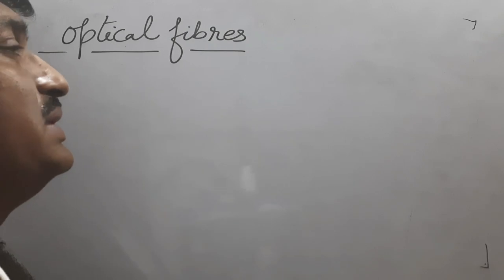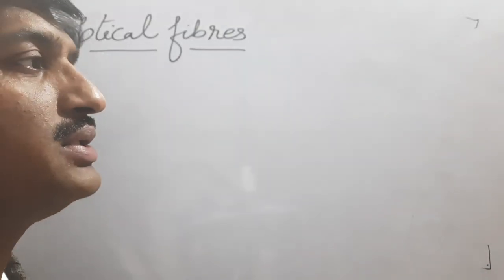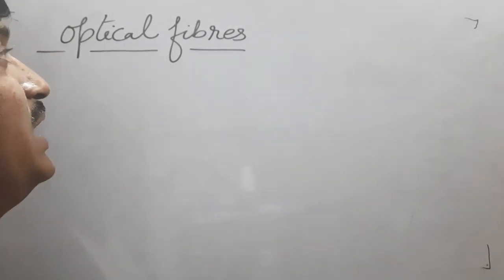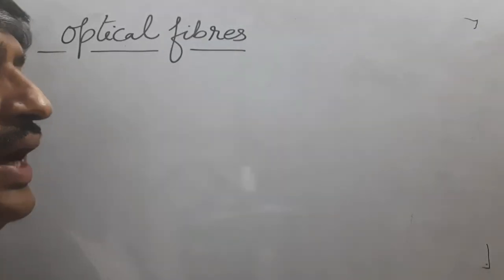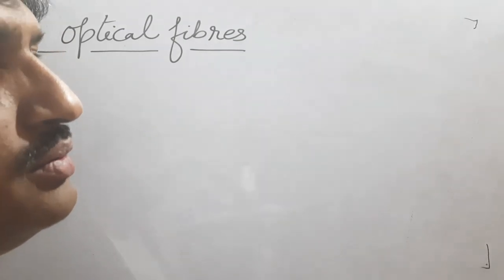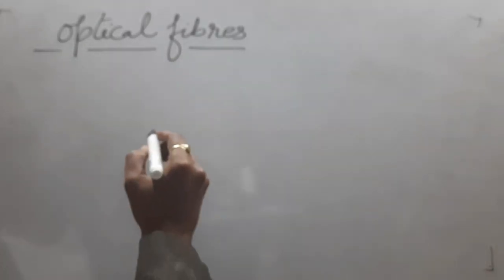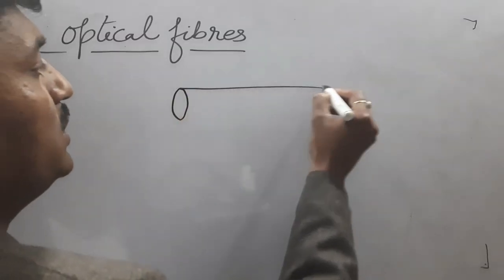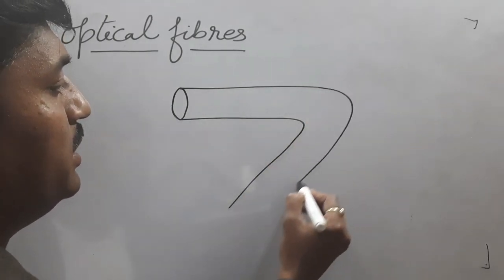Optical fibers are basically pipes made by glass fibers and transparent material, as thin as human hair. When light passes through these pipes by following the principle of total internal reflection, it follows a zigzag path.